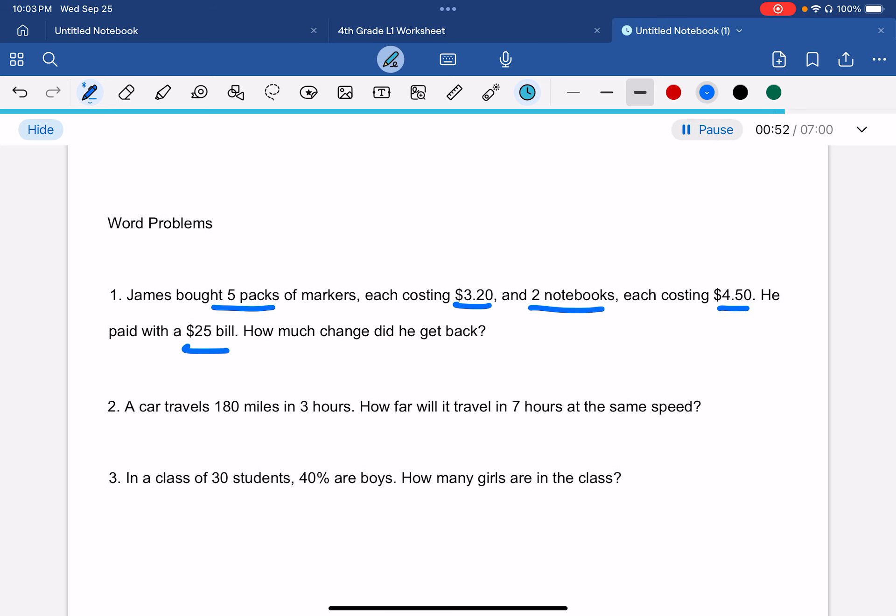So first we need to find the amount he spent. So it would be $3.20 times 5 plus $4.50 times 2. And then this would be subtracted by 25. So let's solve this.